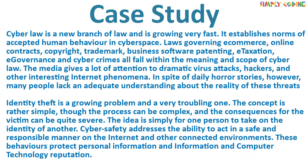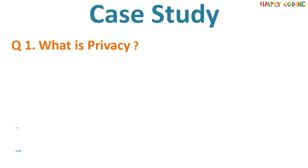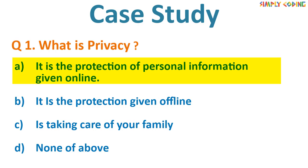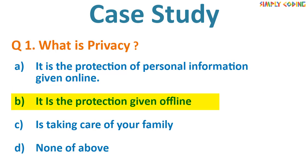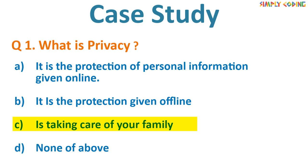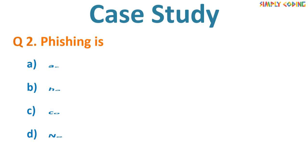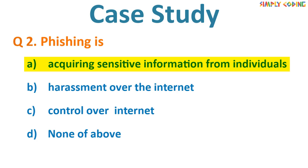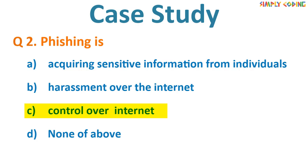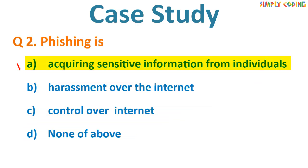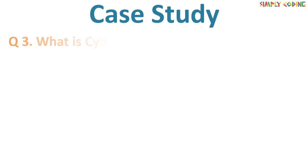While I am reading the questions, I recommend that you pause the video and try to attempt to solve each of them before I give the answer. The first question is: what is privacy? The options are: A. It is the protection of personal information given online; B. It is the protection given offline; C. It is taking care of your family; D. None of the above. The correct answer is A. Next question: Phishing is — A. Acquiring sensitive information from individuals; B. Harassment over the internet; C. Control over the internet; D. None of the above. The answer is A, as it is acquiring sensitive information from individuals.